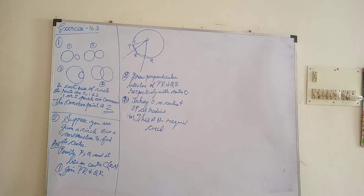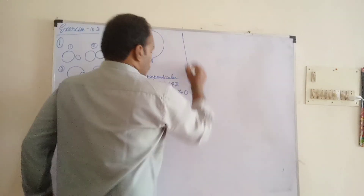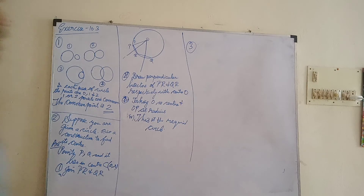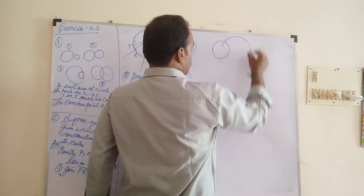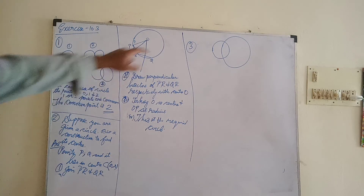Third question: if two circles intersect at two points, prove that their centers lie on the perpendicular bisector of the common chord. So for this third question, first we can draw a diagram with two circles intersecting at two points.